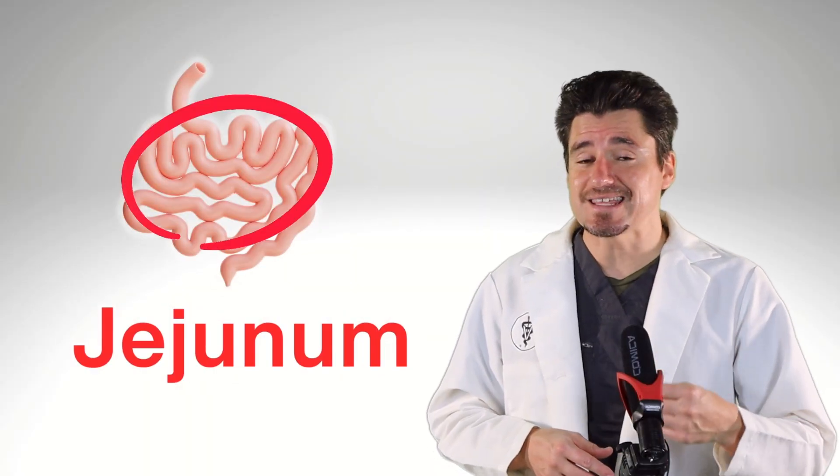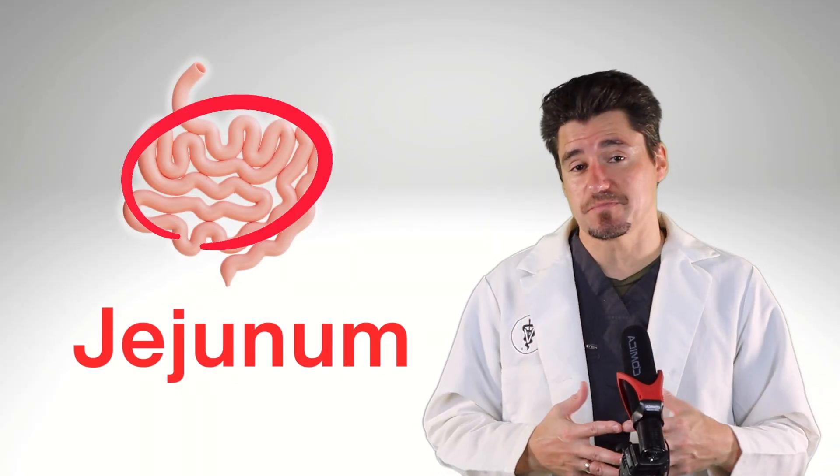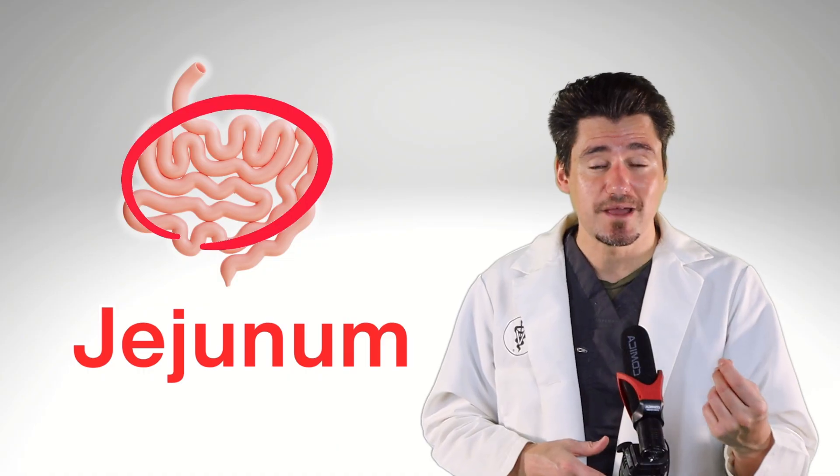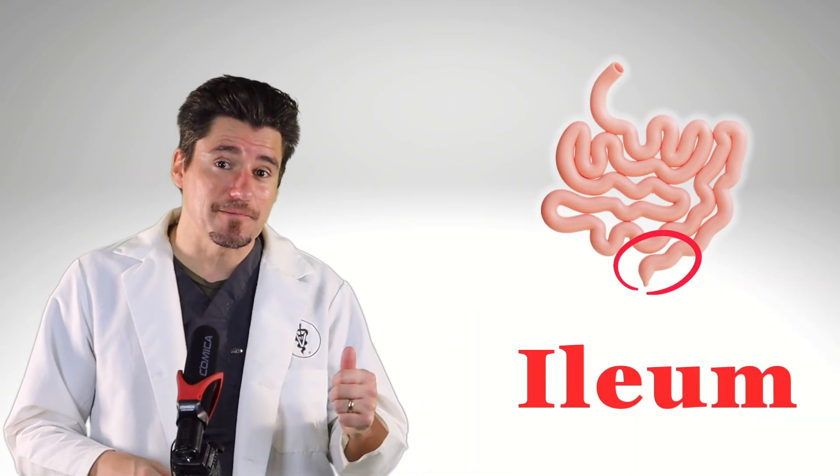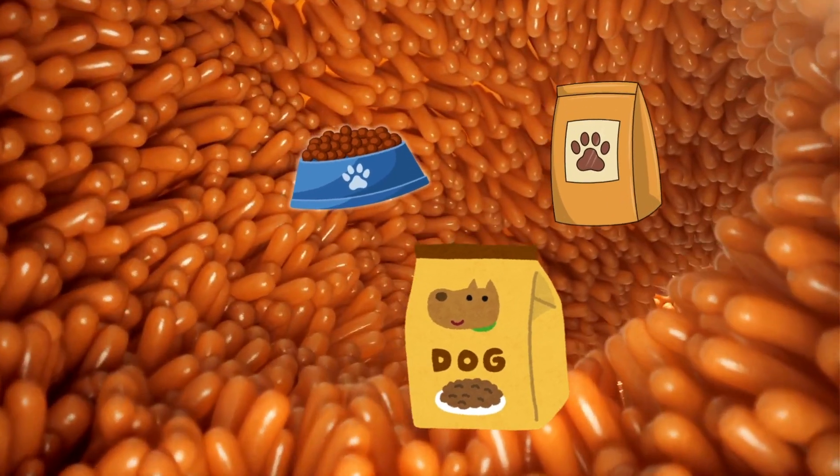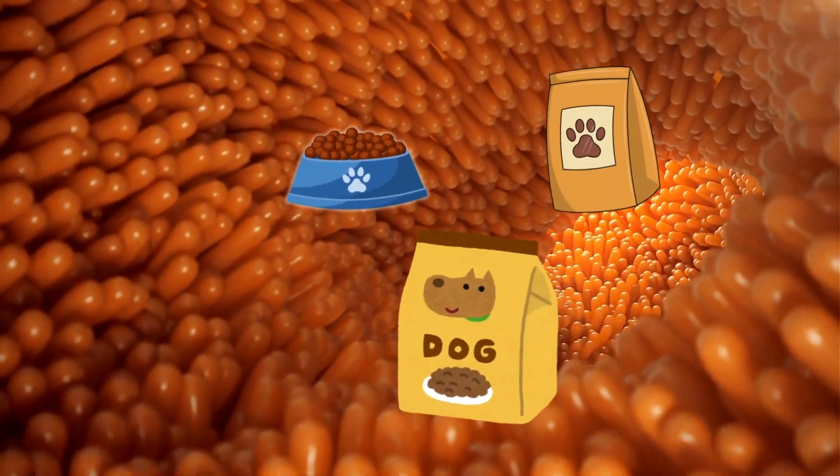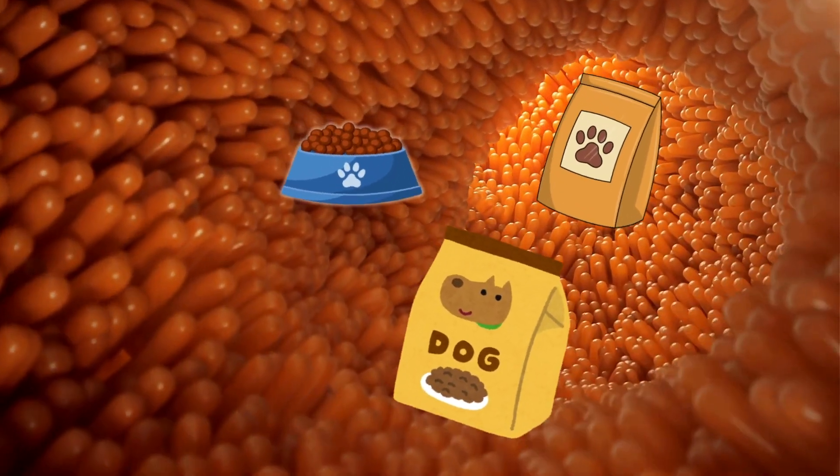Once the food is digested and it gets to the second part of the small intestines, the jejunum and then the final part, the ileum, are going to do all that absorption, all the food, all the nutrition possible. And what isn't absorbed is, of course,